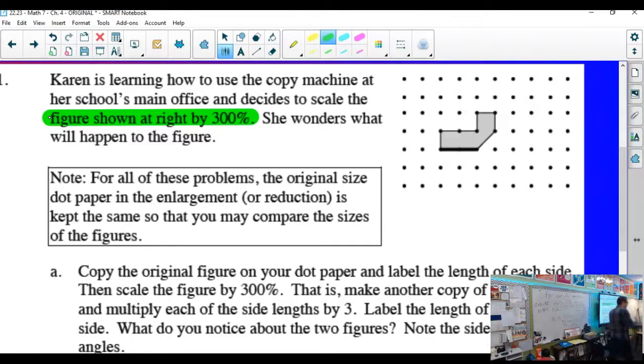And then show that on your paper. Now be careful. Plan it out. If you draw it too high up, you're going to run out of space vertically. How much space do you need in that dot space? Enlarge it by 300%. How do we do that? What does that do to each different side?